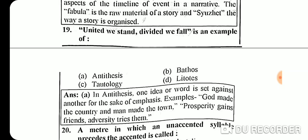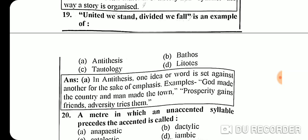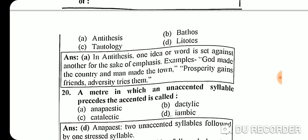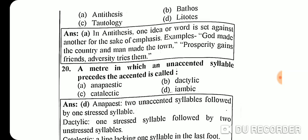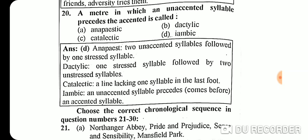Question 19: 'United we stand, divided we fall' is an example of antithesis. In antithesis, one idea or word is set against another for the sake of emphasis. Examples include: 'God made the country and man made the town,' and 'Prosperity gains friends; adversity tries them.'